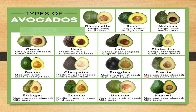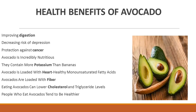Then Keitt-Brogdon, which is medium pear-shaped; then Chinga, which is medium pear-shaped with mild taste; then Zutano, medium pear-shaped with mild taste; then Monroe, which is very large club-shaped with mild taste; then Sharwil, which is medium pear-shaped with mild taste. This is all about the types of avocados.